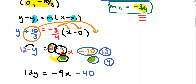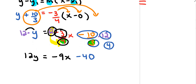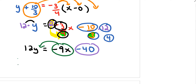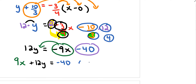Make sure your calculations are correct. Taking negative 9x and bringing it to the other side gives positive 9x, so the final answer is 9x plus 12y equals negative 40.